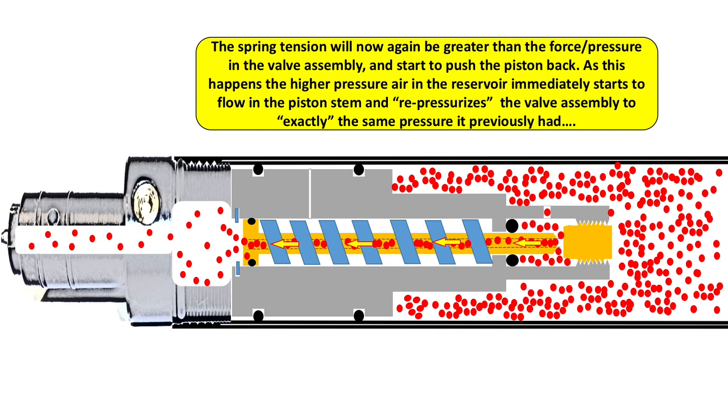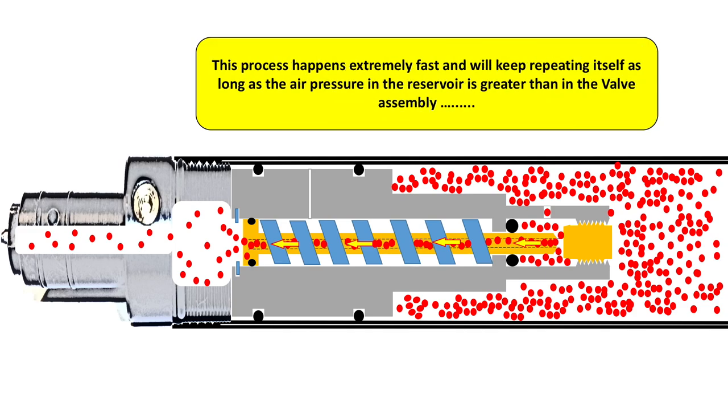As this happens, the knife edge will no longer seat against the adjustment screw, and the high pressure in the air reservoir will immediately again start to flow down the piston stem and into the valve assembly, re-pressurizing the assembly. And keep in mind this happens extremely fast, and it will keep repeating itself as long as the pressure in the reservoir is greater than in the valve assembly.